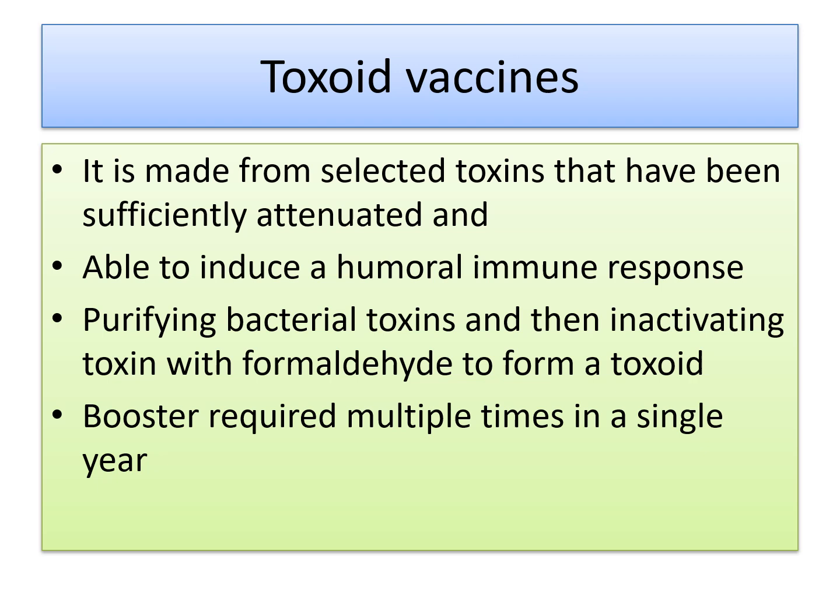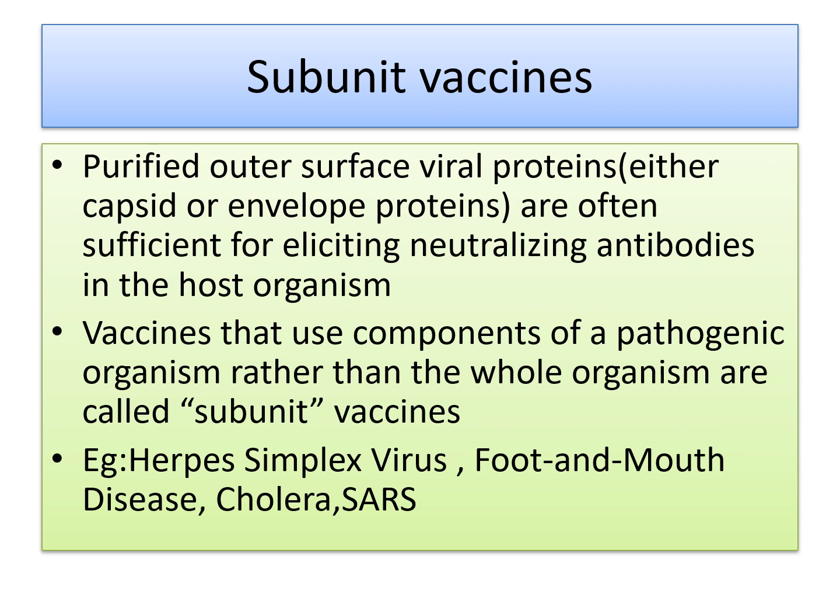Toxoid vaccines are made from selected toxins that have been sufficiently attenuated. Since these organisms are highly toxic and cannot be given as such, the vaccine is made from the toxins and then attenuated to induce a humoral immune system response — that is, B cell lymphocytes or antibodies are raised. The bacterial toxins are purified and then inactivated with formaldehyde to form toxoids. Booster doses are also required multiple times. Examples include diphtheria toxin.